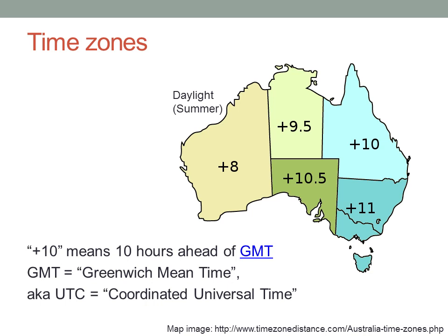Now in Australia, some states have daylight saving. During the summer months, the official time is moved one hour further ahead. Eastern Daylight Time is GMT plus eleven, one hour ahead of Eastern Standard Time at GMT plus ten. Central Daylight Time is GMT plus ten and a half, one hour ahead of Central Standard Time of GMT plus nine and a half. However, Western Australia, the Northern Territory and Queensland do not have daylight saving time. The exact dates when daylight saving begins and ends vary a little from year to year, and sometimes from state to state.